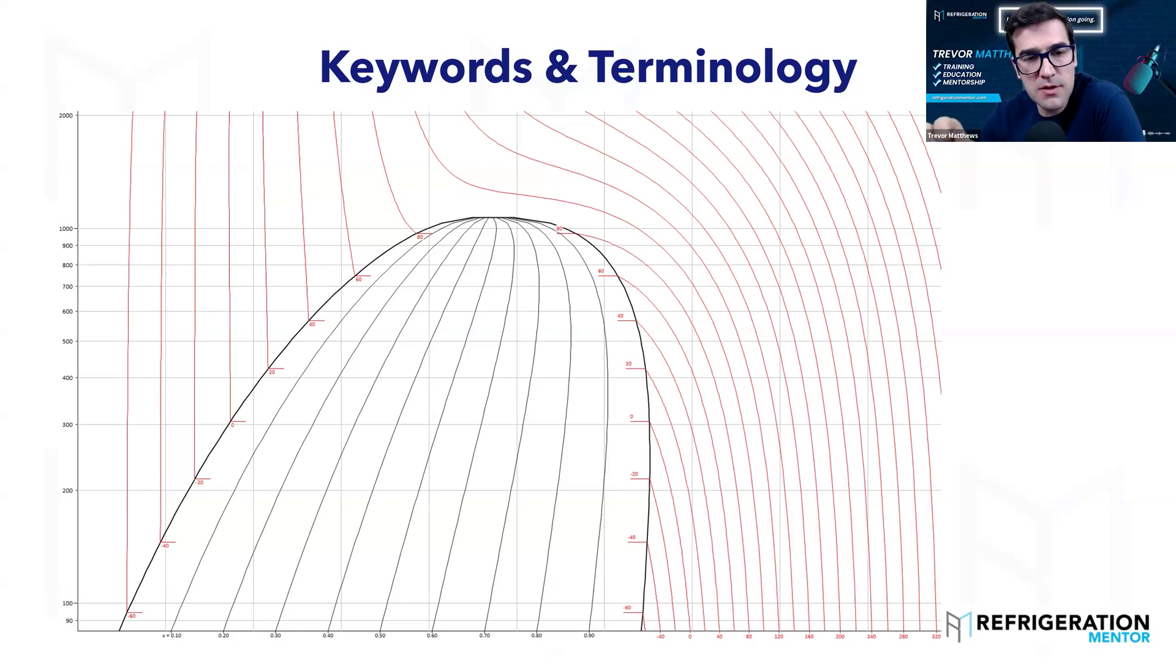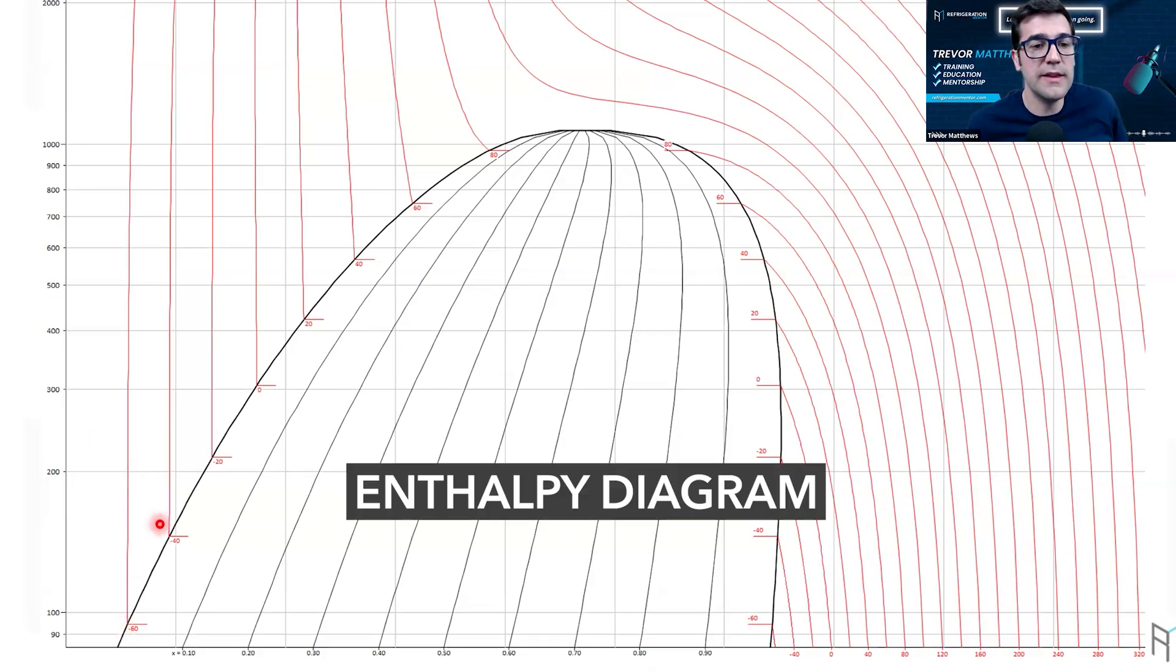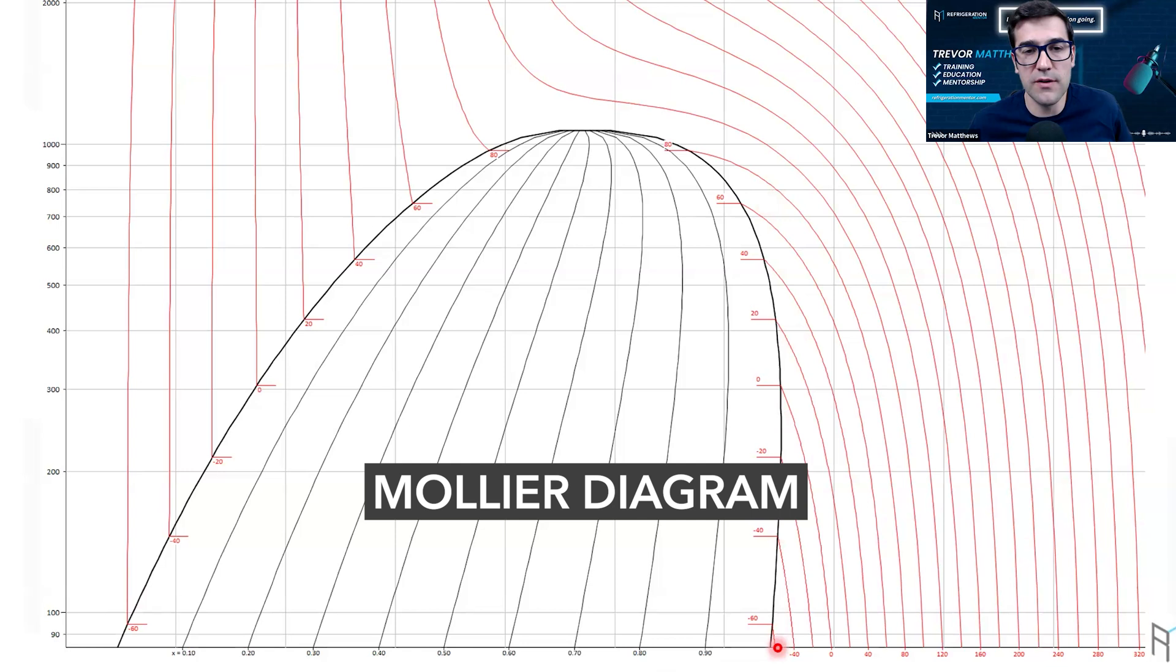I want to dive in, go back to the basics, talk about some of the keywords and terminologies, which I really believe is super important. So what we have here is the good old enthalpy diagram, Mollier diagram, pH log diagram. It's called differently. People use different terms for it.